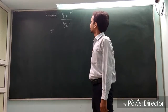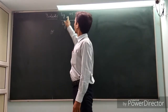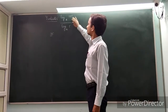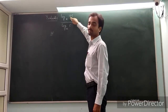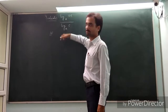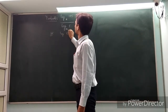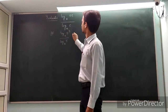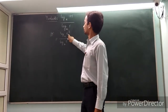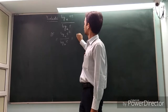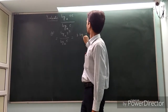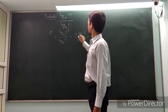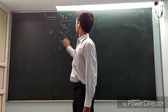Let us evaluate the expression log 125 to the base a in the numerator and log 5 to the base a in the denominator. In the numerator, 125 can be written as 5 cube. So this is log 5 cube to the base a divided by log 5 to the base a. Log 5 cube can be written as 3 log 5 to the base a. Cancelling these terms, we get 3.